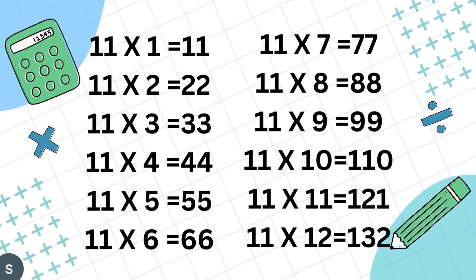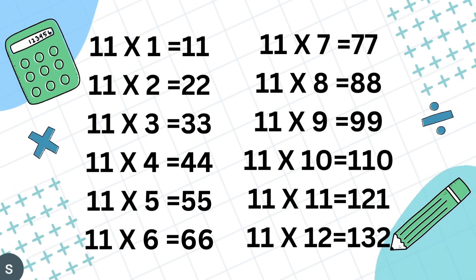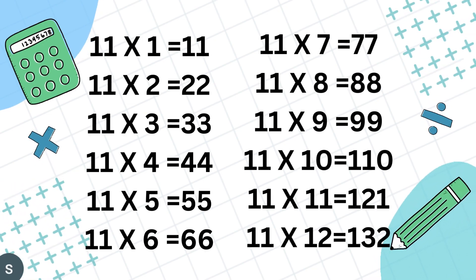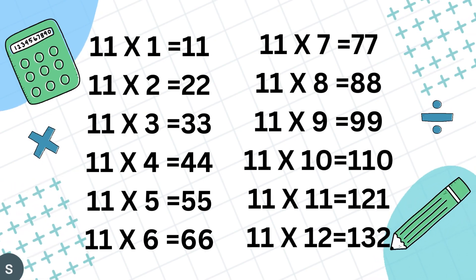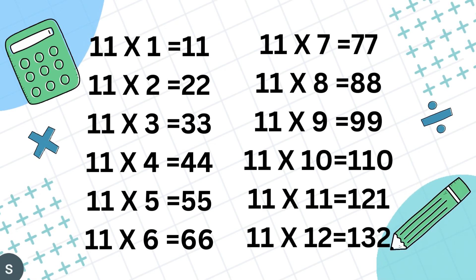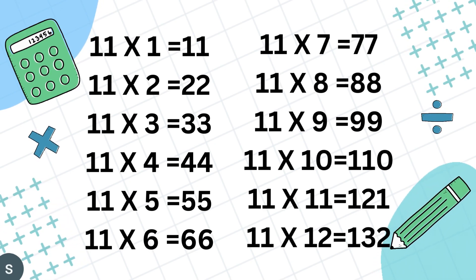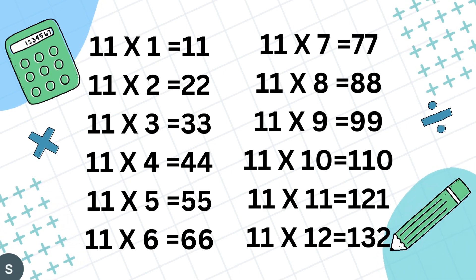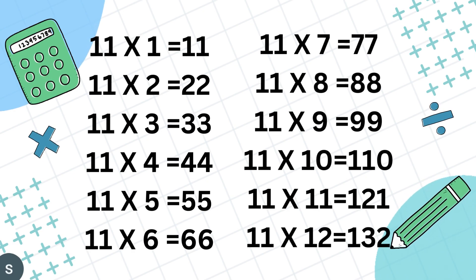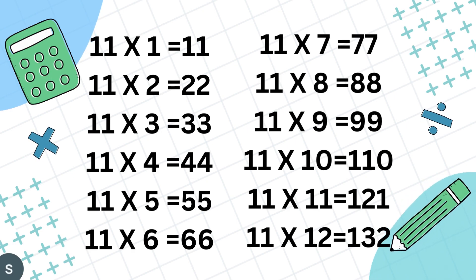Table of 11. 11 1's are 11, 11 2's are 22, 11 3's are 33, 11 4's are 44, 11 5's are 45, 11 6's are 66.